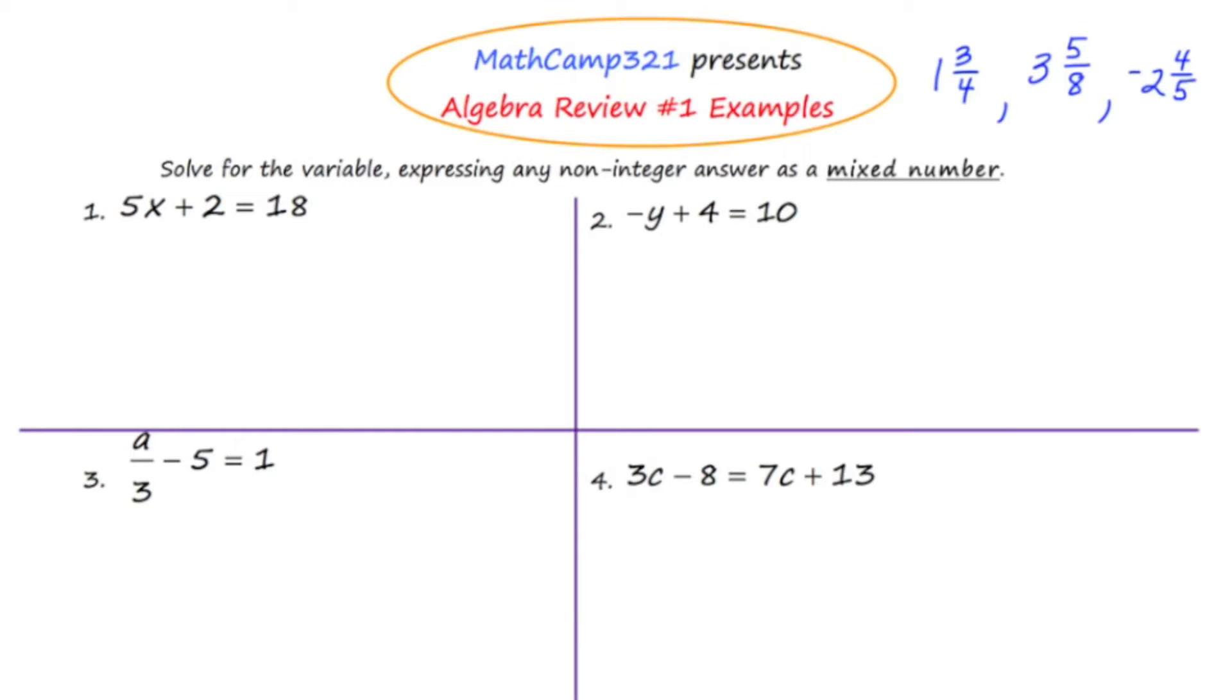As we're solving these example problems, if we get an answer that's not an integer, we're supposed to express it as a mixed number, just for practice. In number 1, our objective is to solve for x. To get x isolated, or to get x by itself, we need to get rid of that 2. To undo plus 2, we're going to subtract 2 from both sides. The 2 and the negative 2 are going to cancel out, so we're left with 5x is equal to 16.